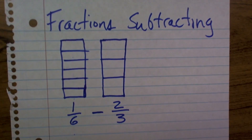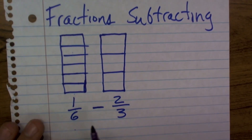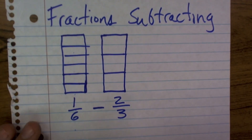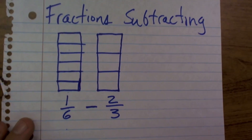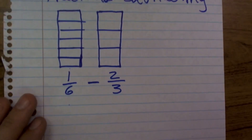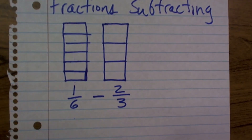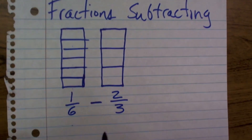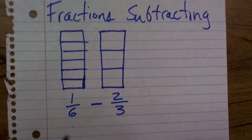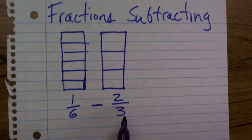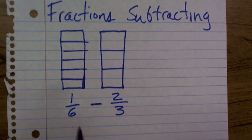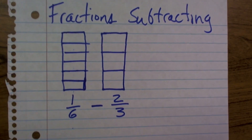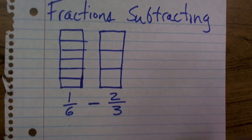Okay, what we're going to do is show you fractions when we have unlike denominators. When we're adding or subtracting, we always have to make sure we have the common denominators. So in this case, I noticed that my common denominator is six.